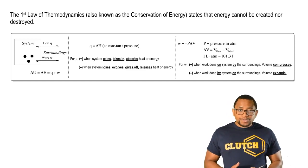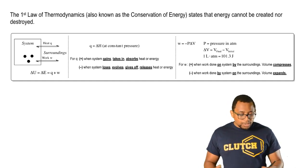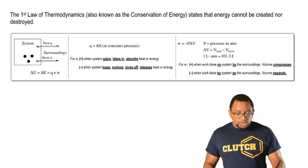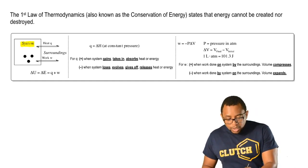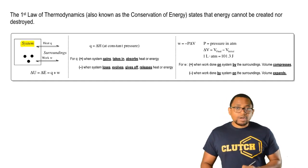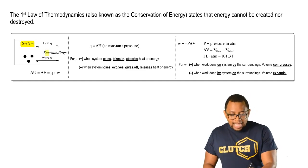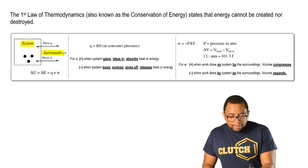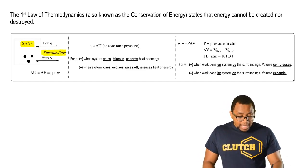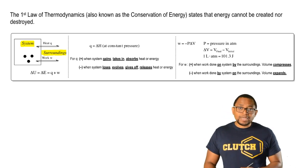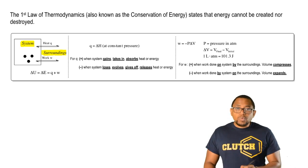Usually we refer to the first law of thermodynamics when talking about two ideas. We have our system, which represents our chemical reaction, and then our surroundings, which is everything else. When we're talking about the first law of thermodynamics, we're talking about how energy can go between these two ideas.